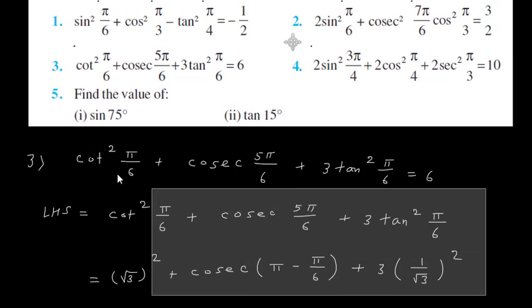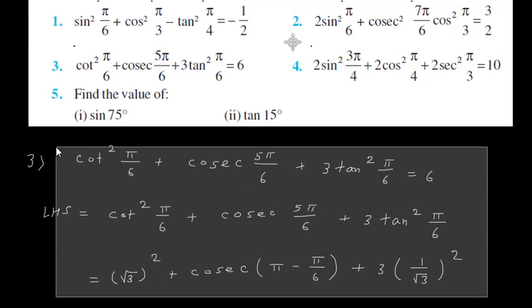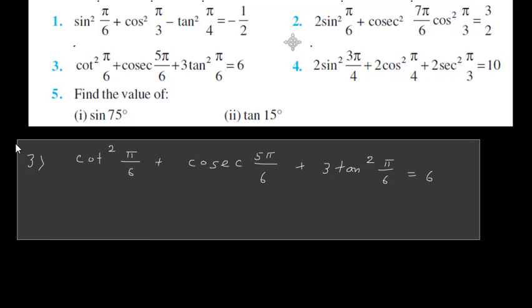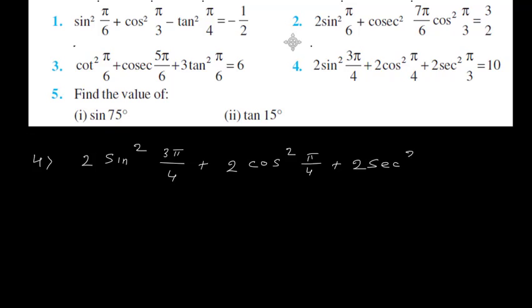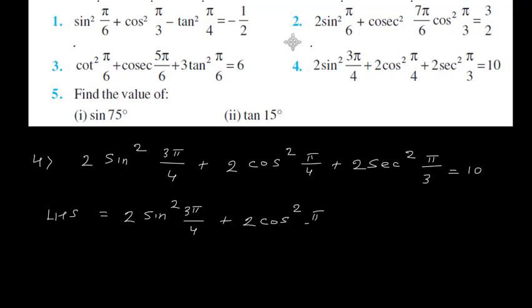Now let us see the fourth question. We have 2 sin square 3 pi by 4 plus 2 cos square pi by 4 plus 2 sec square pi by 3 equals 10. So here left hand side equals 2 sin square 3 pi by 4 plus 2 cos square pi by 4 plus 2 sec square pi by 3.